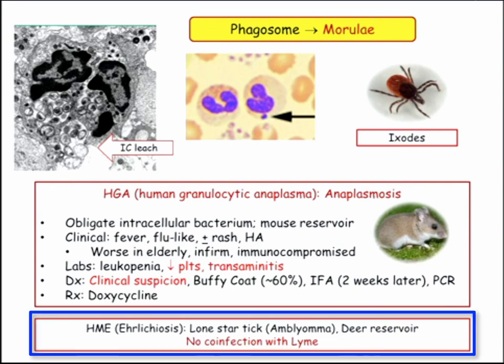Ehrlichiosis is not with Ixodes — that's a different tick, the Lone Star tick. You're going to see the name of it and see this tick as a distractor. They're not coming after you with ehrlichiosis or that tick — it's going to be a distractor, but you have to know what it's associated with. Make your life easy.